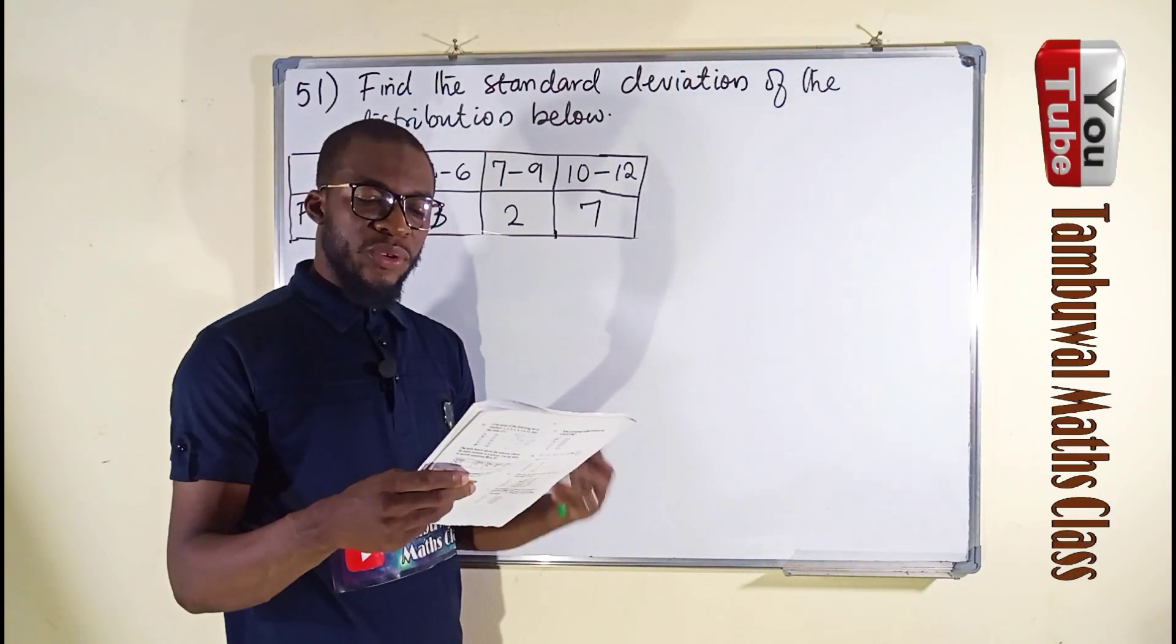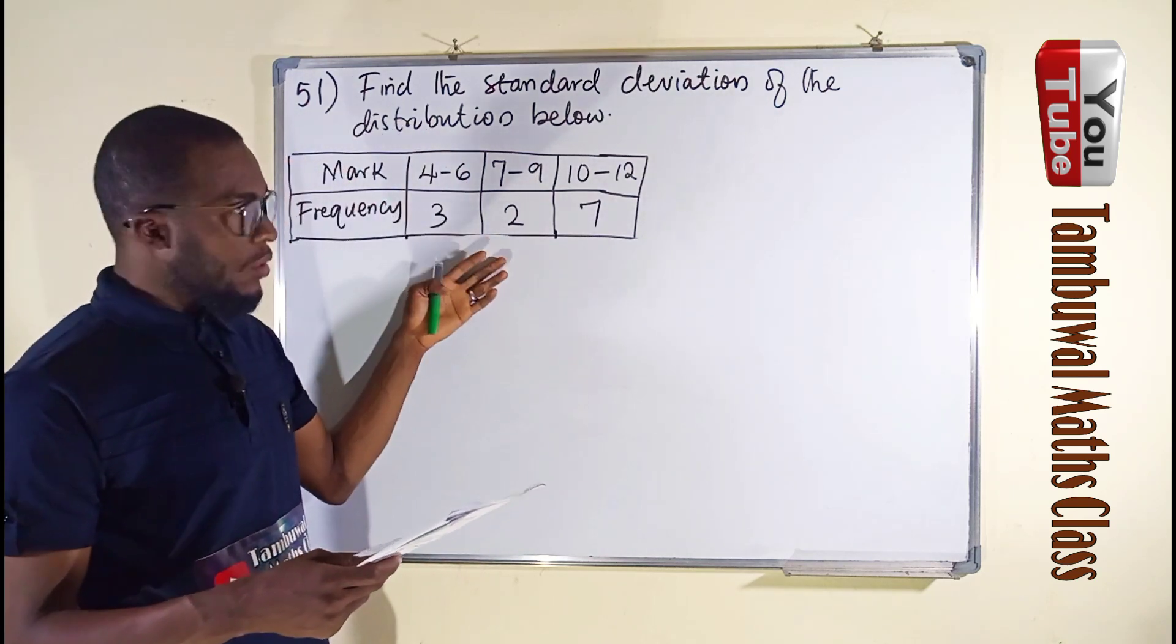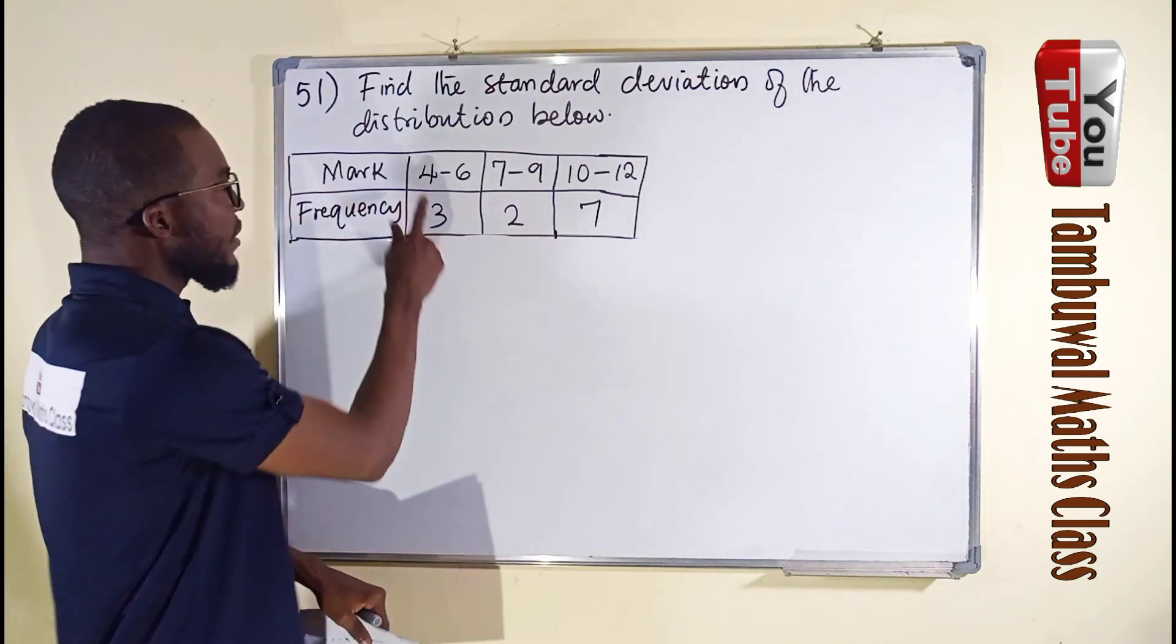Question number 51. It says we should find the standard deviation of the distribution below. This is a table of distribution which is also in grouped data because you can see the range.